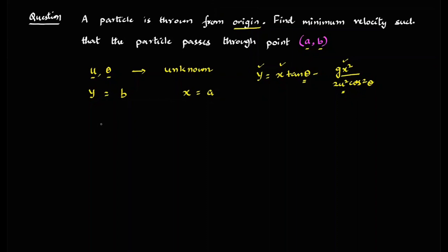So by substituting A and B, I will get B is equal to A tan theta minus G A square upon 2U square cos square theta. Now, as I discussed earlier in one of the problems about how to use the quadratic equation, I know that theta is variable. So we'll make a quadratic equation in form of tan theta or cos theta.